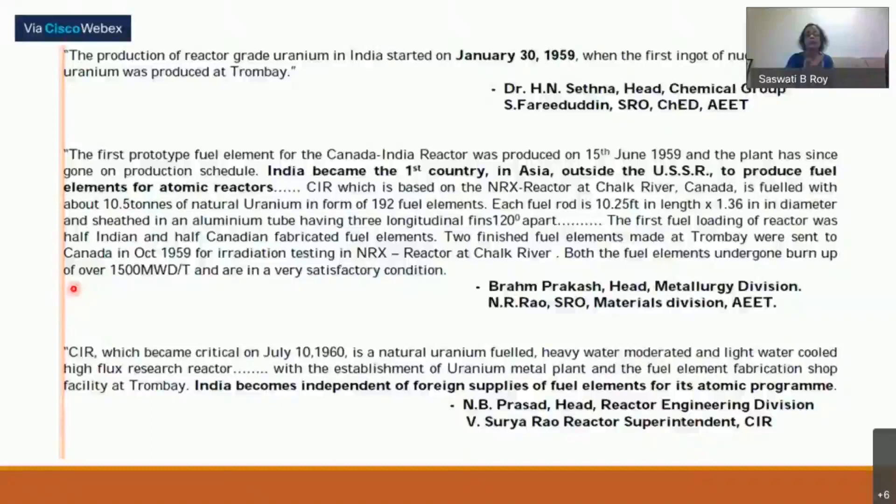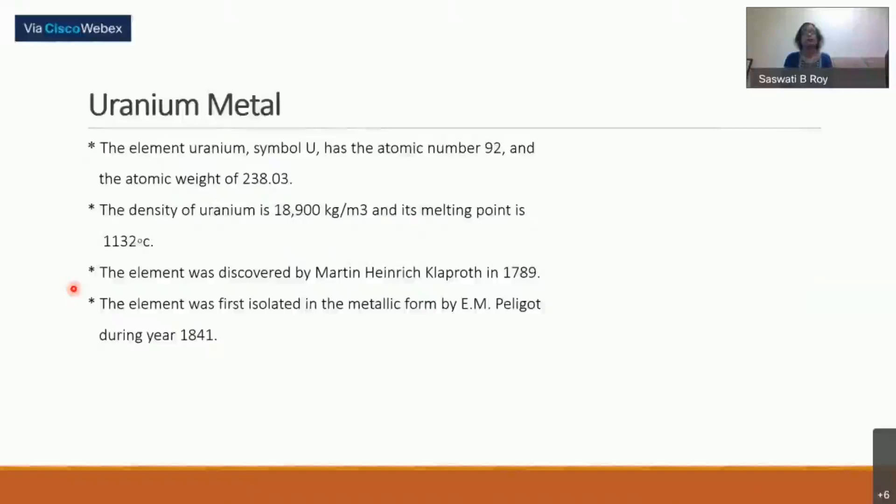Uranium metal, symbol U, has atomic number 92 and atomic weight 238.03. Its density is 18,900 kg per cubic meter and melting point is 1132 degrees centigrade. It is very dense - one ton metal ingot will be so compact. Its bad point is this melting point, quite low compared to uranium oxide. That's the reason why uranium metal cannot be used for high temperature reactors.